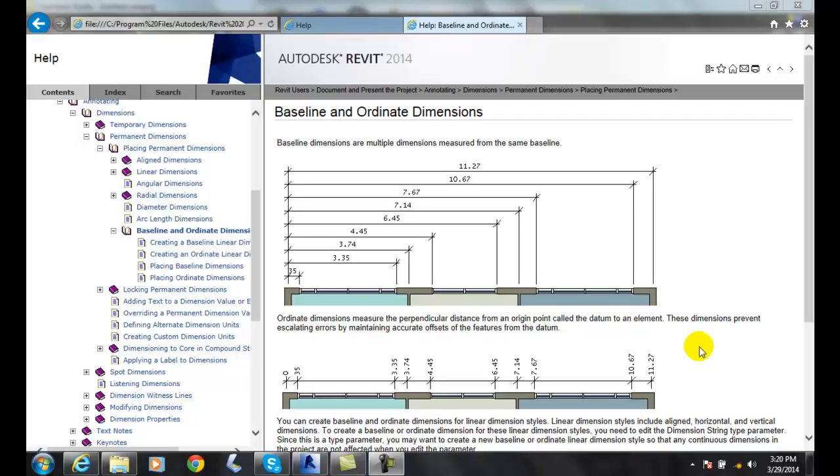Baseline and ordinate dimensions. A baseline dimension is the one that's up here on top. A baseline measures the dimensions from the same baseline, and so everything goes perpendicular off that baseline.